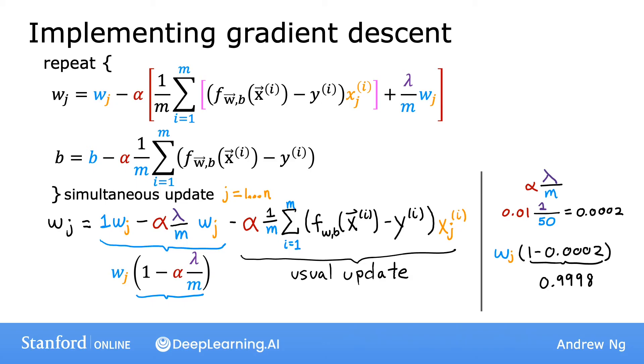So what regularization is doing on every single iteration is you're multiplying w by a number slightly less than 1, and that has the effect of shrinking the value of w_j just a little bit. So this gives us another view on why regularization has the effect of shrinking the parameters w_j a little bit on every iteration, and so that's how regularization works.